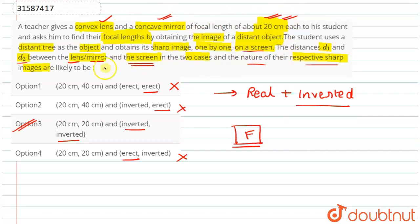In both cases, we can see how much distance there is - the screen and the mirror, the screen and the lens. We can see 20 cm in both cases, because the focal length is the same. So the distance is 20, 20. So we have understood that option number 3 is the correct answer.